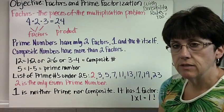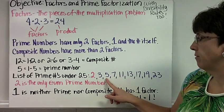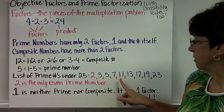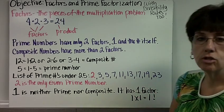Here is a list of the prime numbers under 25: 2, 3, 5, 7, 11, 13, 17, 19, 23.